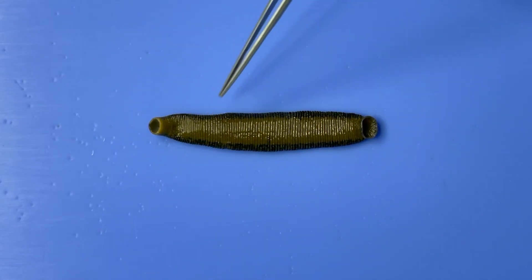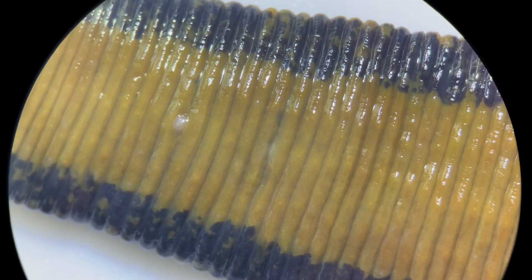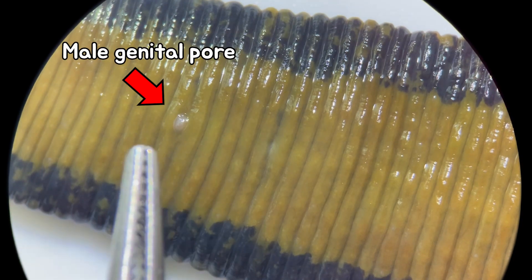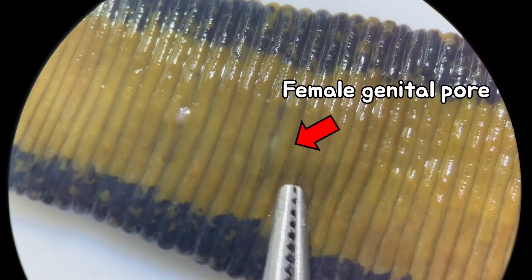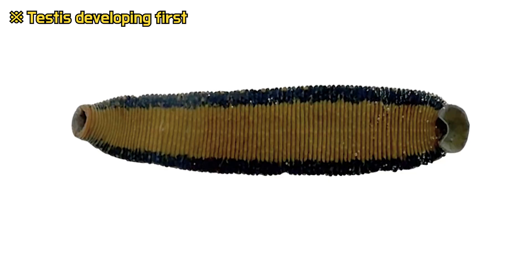If you take a closer look at the ventral side of the leech, you'll notice two distinct openings. These openings are the genital pores where reproductive cells are discharged. The one closer to the head is the male genital pore, and the one below it is the female genital pore. They're hermaphrodites.